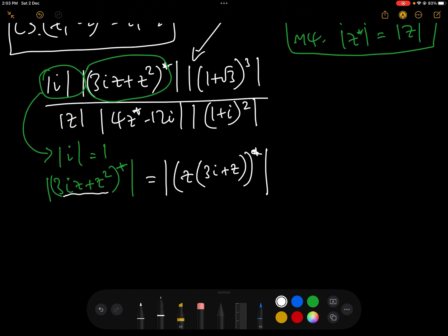Okay, and by the conjugate rule number 3, we can rewrite that as modulus z conjugate 3i add z conjugate. And then by modulus rule 1,